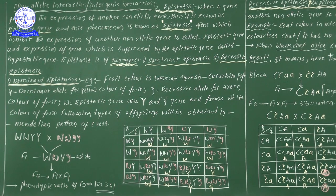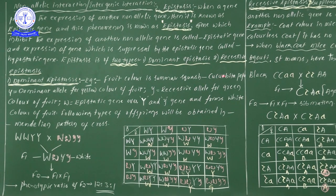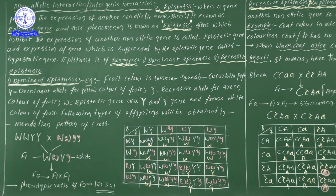So capital W character is white. In order to obtain F2 generation, F1 × F1 self-pollination is done. In F2 generation, the phenotypic ratio is 12:3:1.